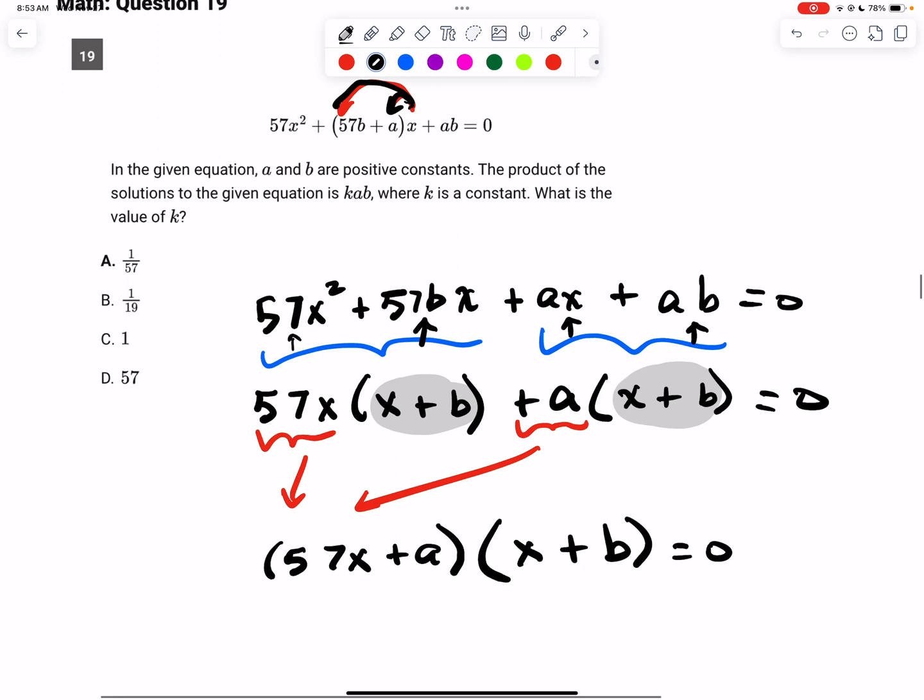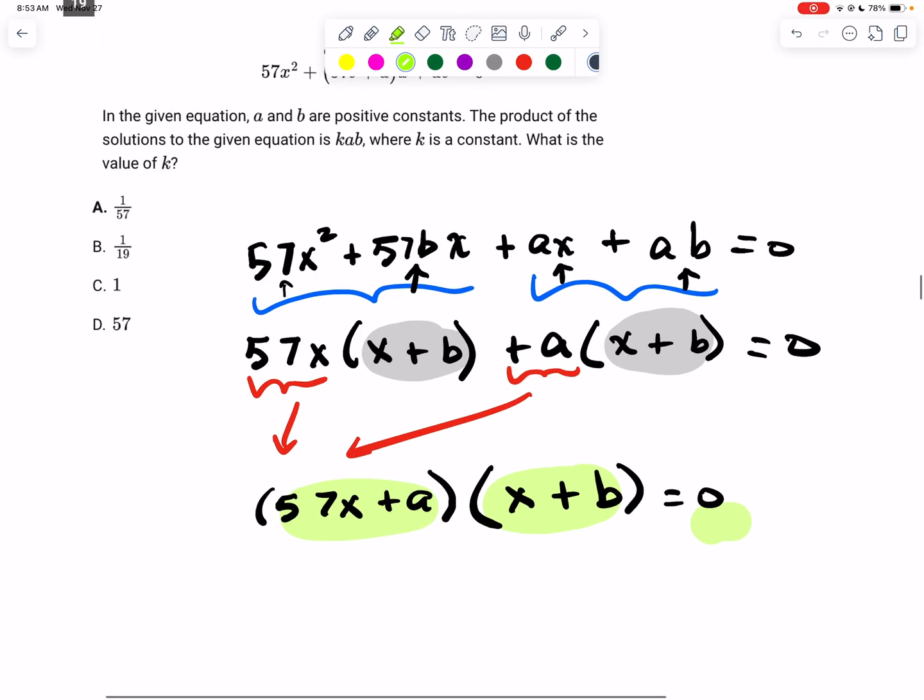So now you may recall that if I have two things being multiplied, so here I have this being multiplied by this, and the answer is 0. That means at least one of those terms has to be 0. So either 57x plus a equals 0, or x plus b is equal to 0. And we'd solve this the same way that we solve any quadratic equation at that point, or that becomes a linear equation.